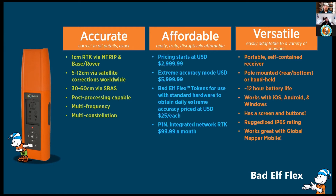The Battle Flex is also versatile — easily adaptable to a variety of activities. It's a portable, self-contained receiver with no wires and no external antennas; everything is integrated into a single form factor about the size of a spray can. It's pole-mounted on the bottom and can also be handheld ergonomically for GIS data collection. It has a 5/8-inch standard survey connector with adapters for 1/4-20 for a hiking stick, and a 12-hour-plus battery depending on which modes you're using. There's a USB On-The-Go port so you can plug in a battery pack from Amazon to actively charge your Flex if you need more than 12 hours in a day.